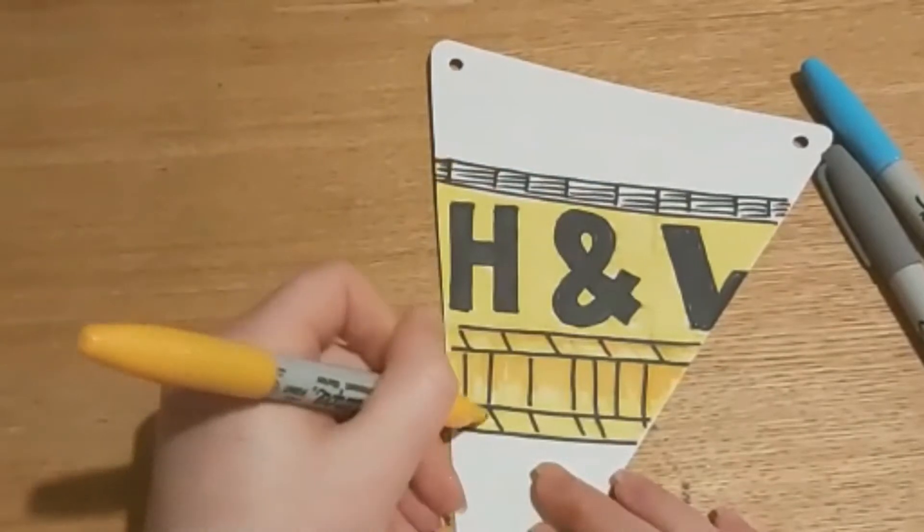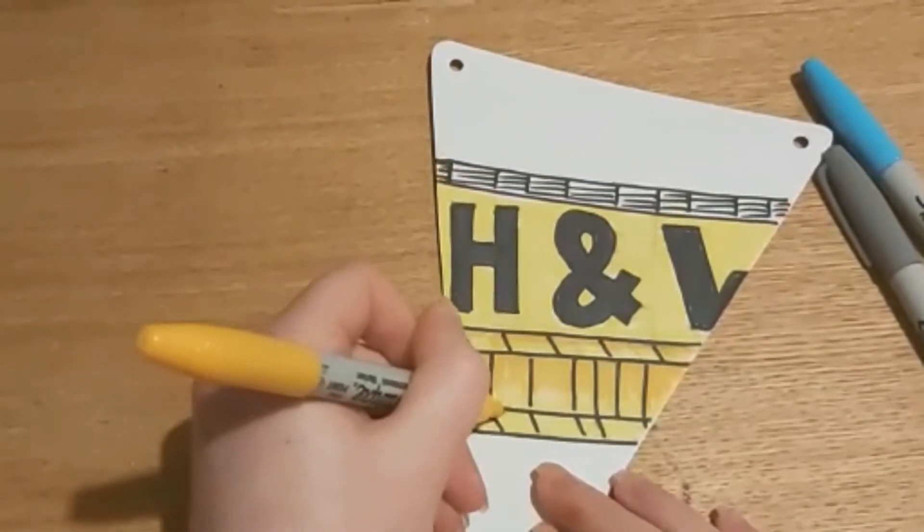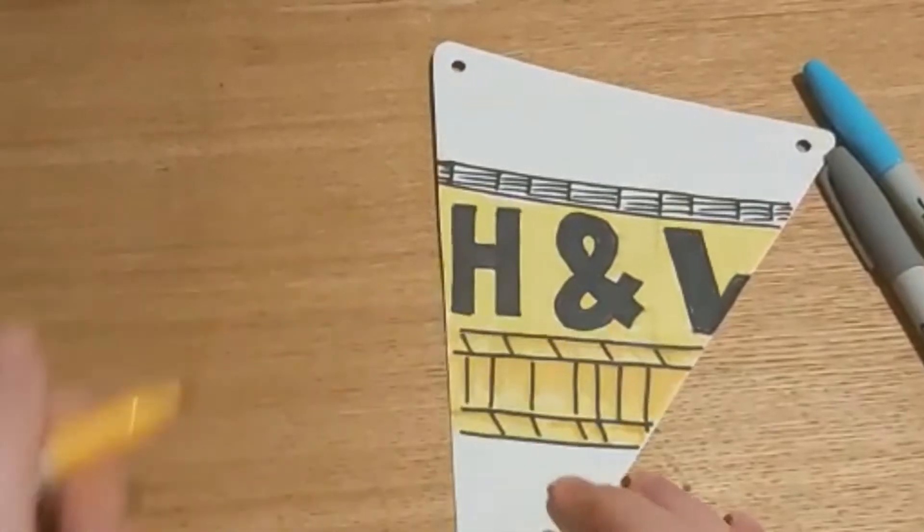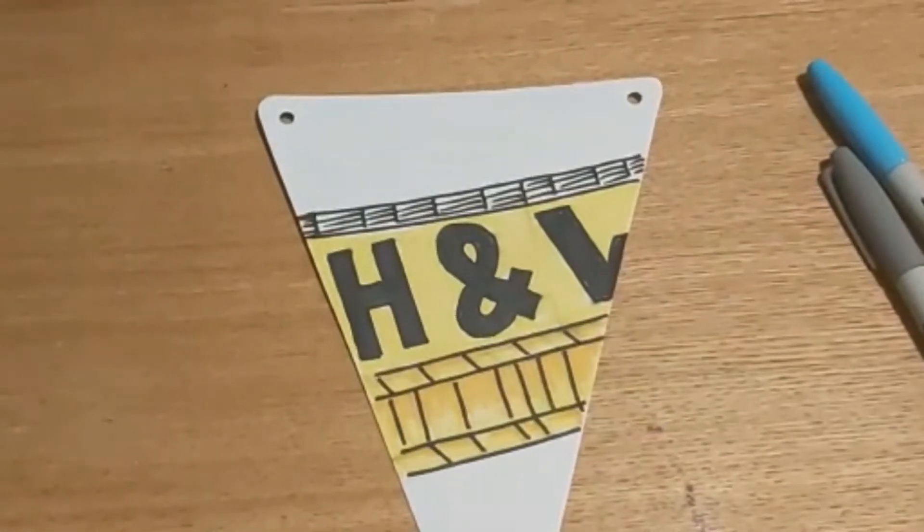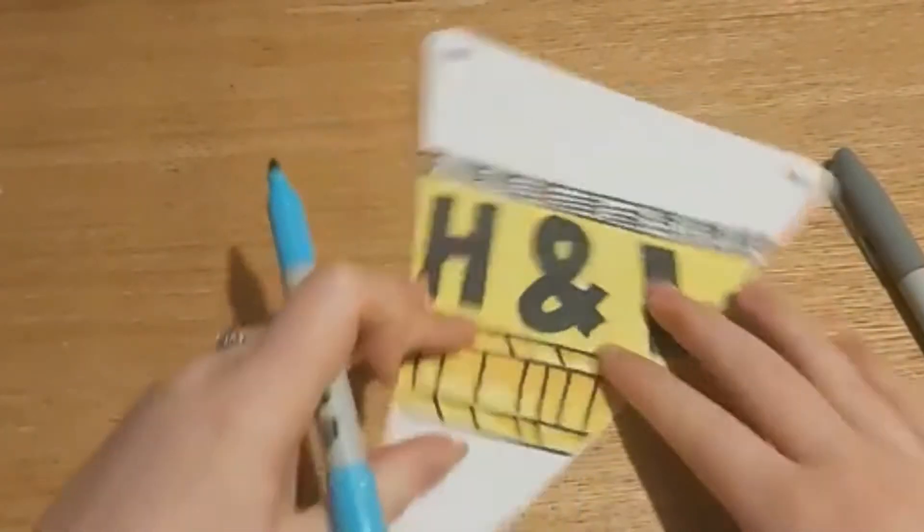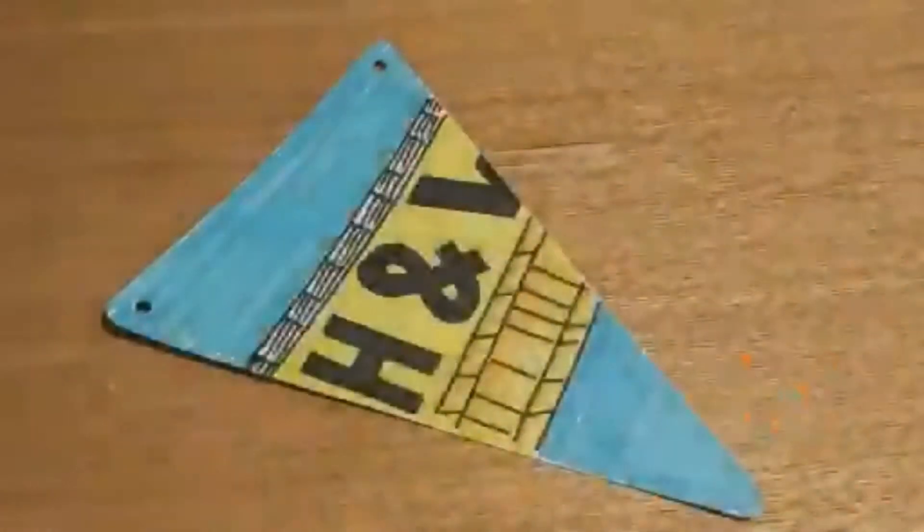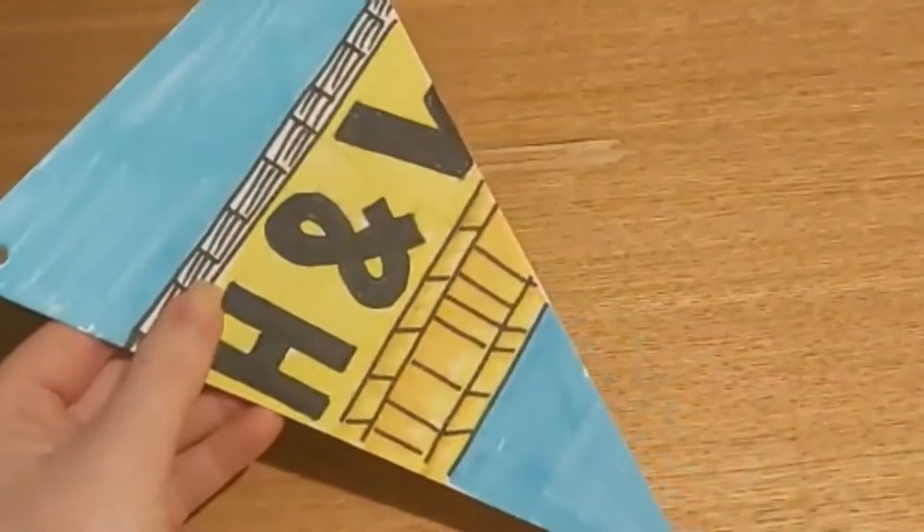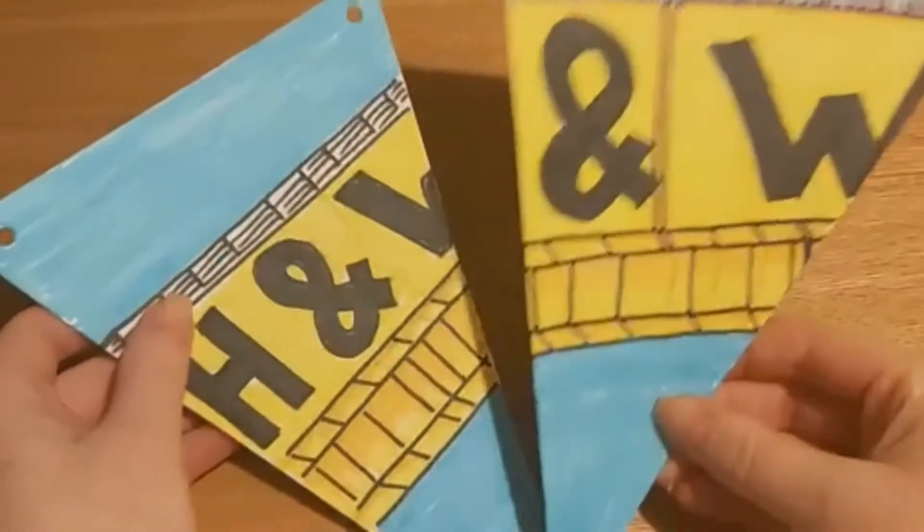There we go. There we go. Makes it look a wee bit more 3D and then I've got my blue for the sky. So there we have it, our finished Harland and Wolff bunting. I've also drawn another one so I've got one for each crane.